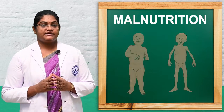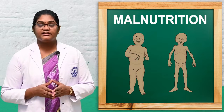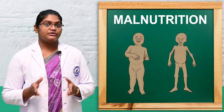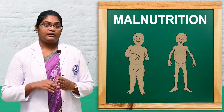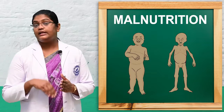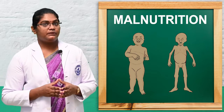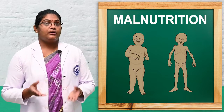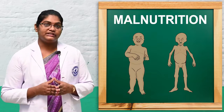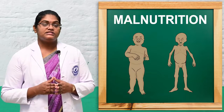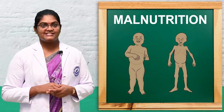Today we discussed malnutrition, also known as protein energy malnutrition, because the condition occurs mainly due to protein malnutrition and energy malnutrition. The two main types are marasmus and kwashiorkor. Hope you all understand malnutrition and how to prevent it. This is all for today's class — signing off until the next video.